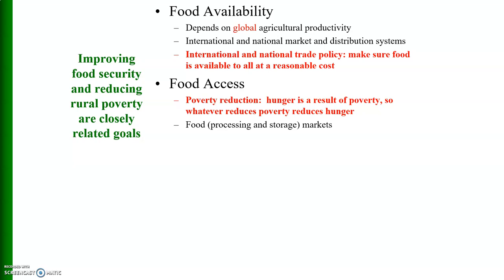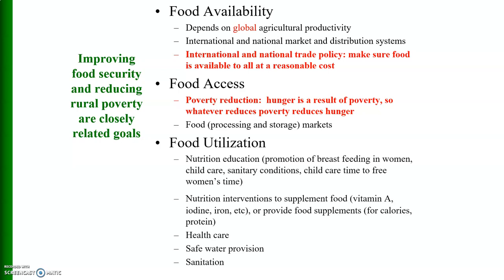We also need to develop food processing and storage markets and then food utilization. This includes nutrition education — promotion of breastfeeding in women, child care, sanitation conditions, and freeing women's time. Nutrition interventions to supplement food include vitamin A, iodine, iron, and other food supplements for calories and protein, as well as health care and safe and clean water provision. Nutrition and sanitation are very important.